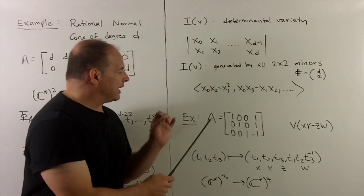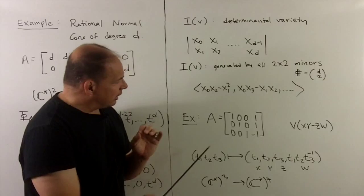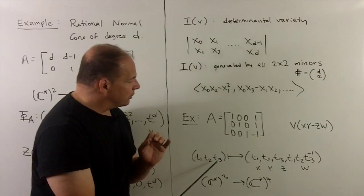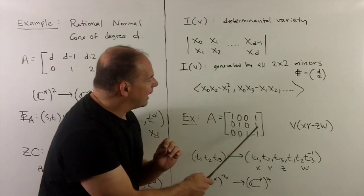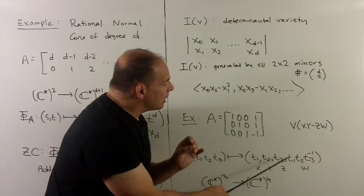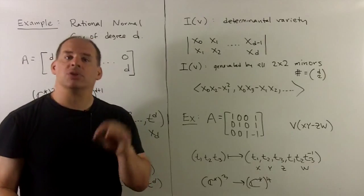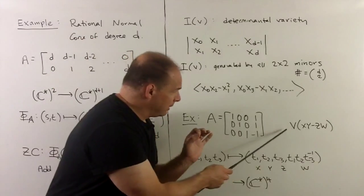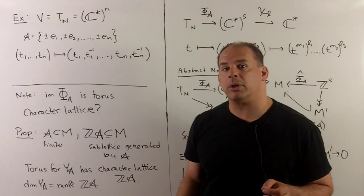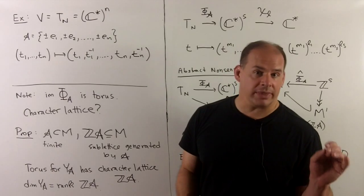Another example: take A with columns (1,0,0), (0,1,0), (0,0,1), (1,1,−1). We're going from C*^3 to C*^4, sending (T₁,T₂,T₃) to (T₁, T₂, T₃, T₁T₂T₃⁻¹). Looking for relations among our coordinates, we note X·Y − Z·W gives us the Zariski closure, so we have the variety defined by XY − ZW. As a final example, of course the torus itself is an affine toric variety — we'll say a lot more about this later.